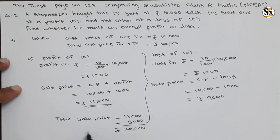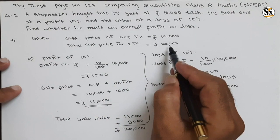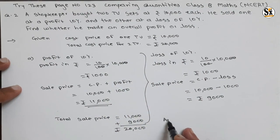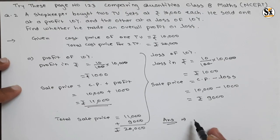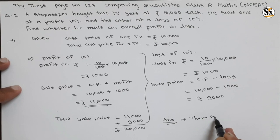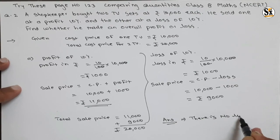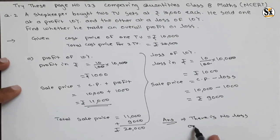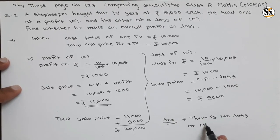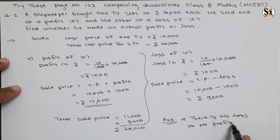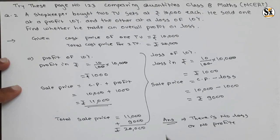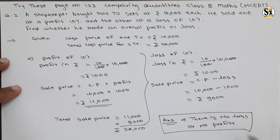Total sale price is rupees 20,000 and total cost price is also rupees 20,000. Since sale price equals cost price, there is no loss and no profit. This is our final answer.